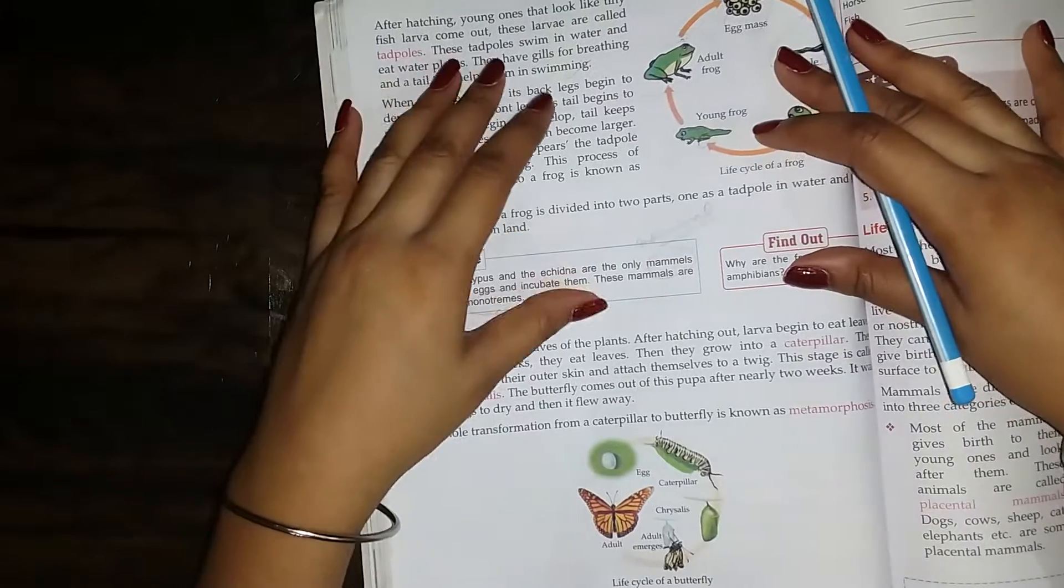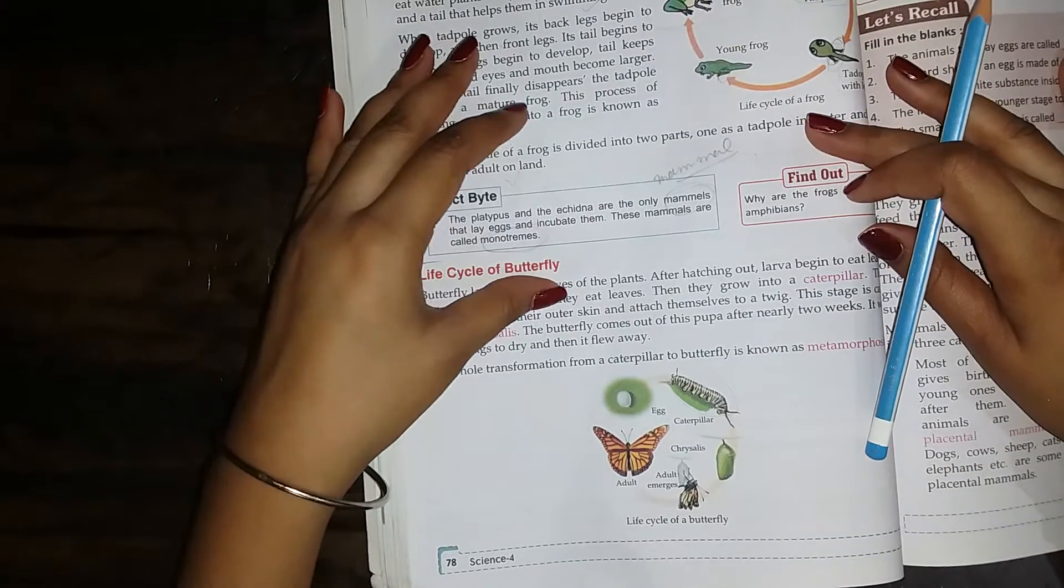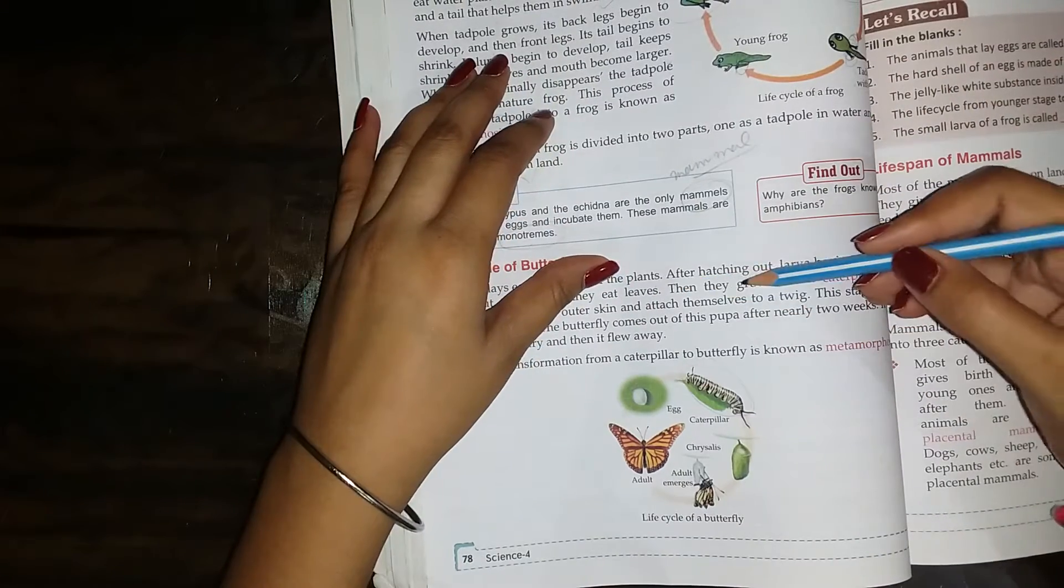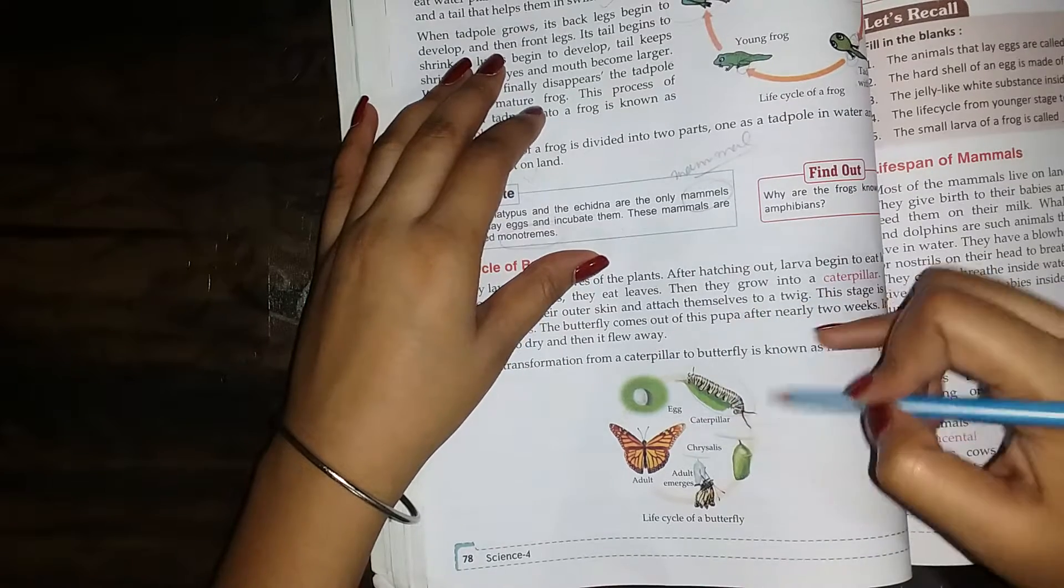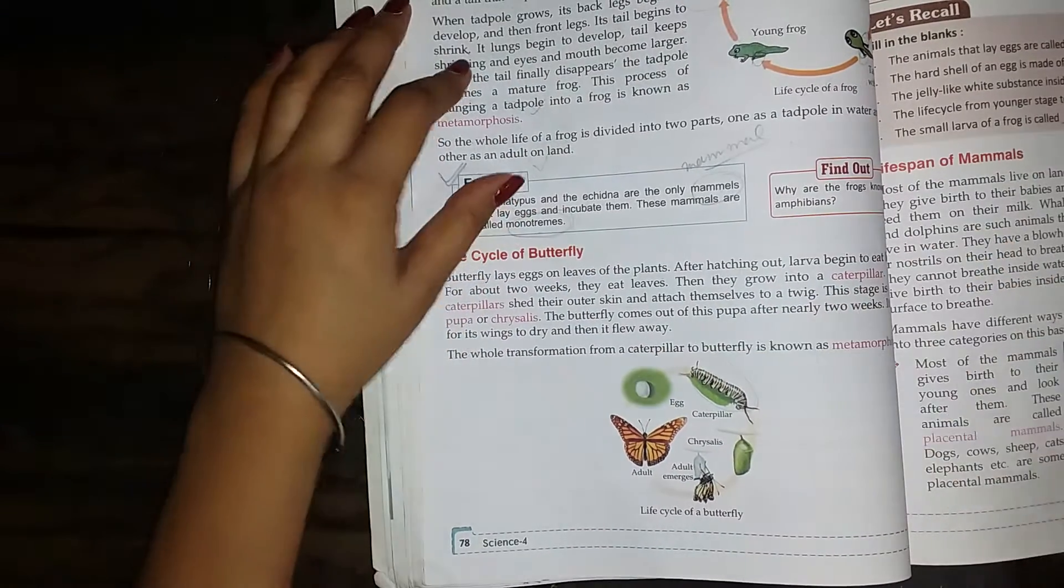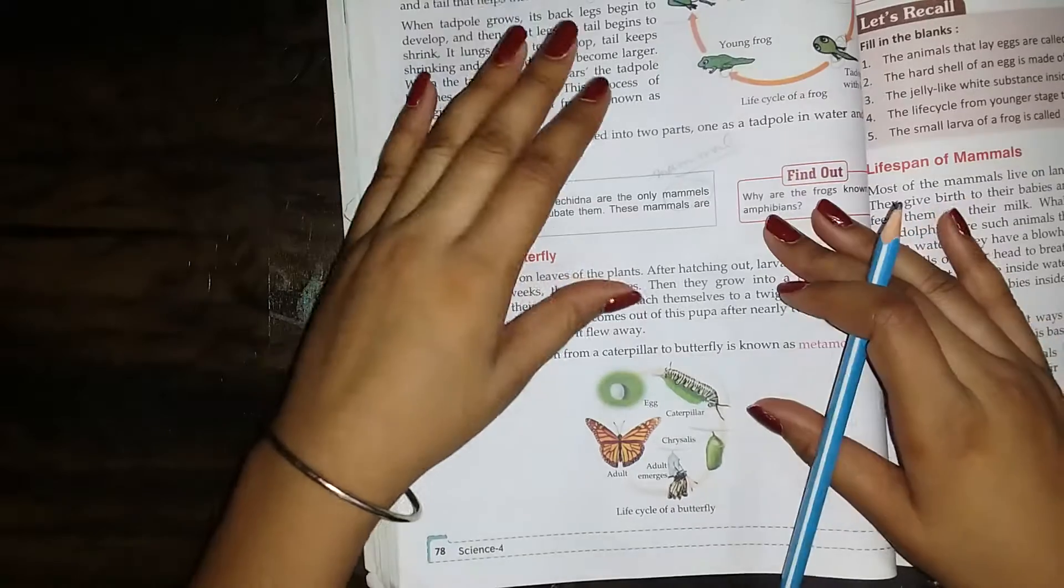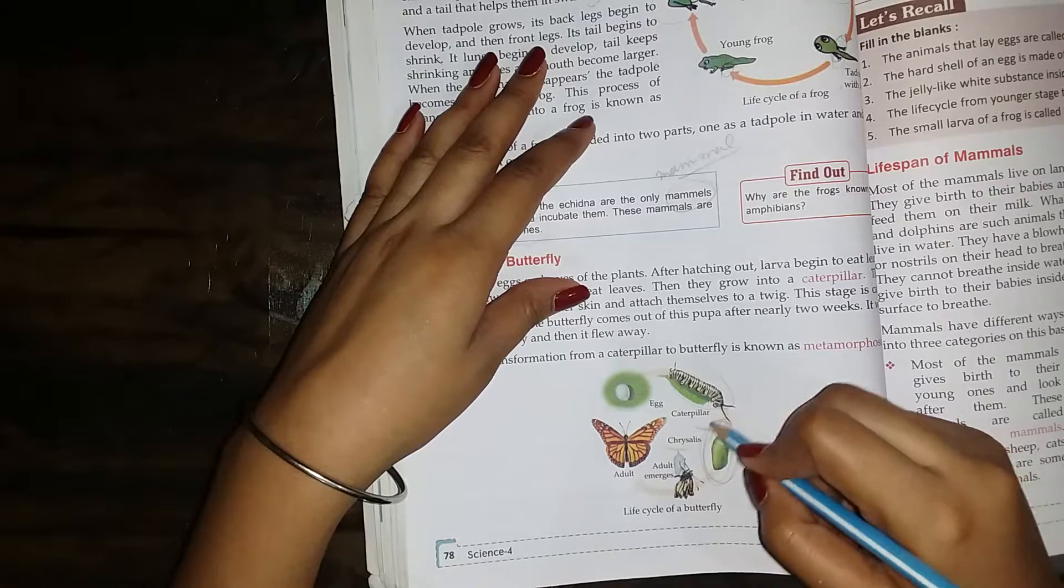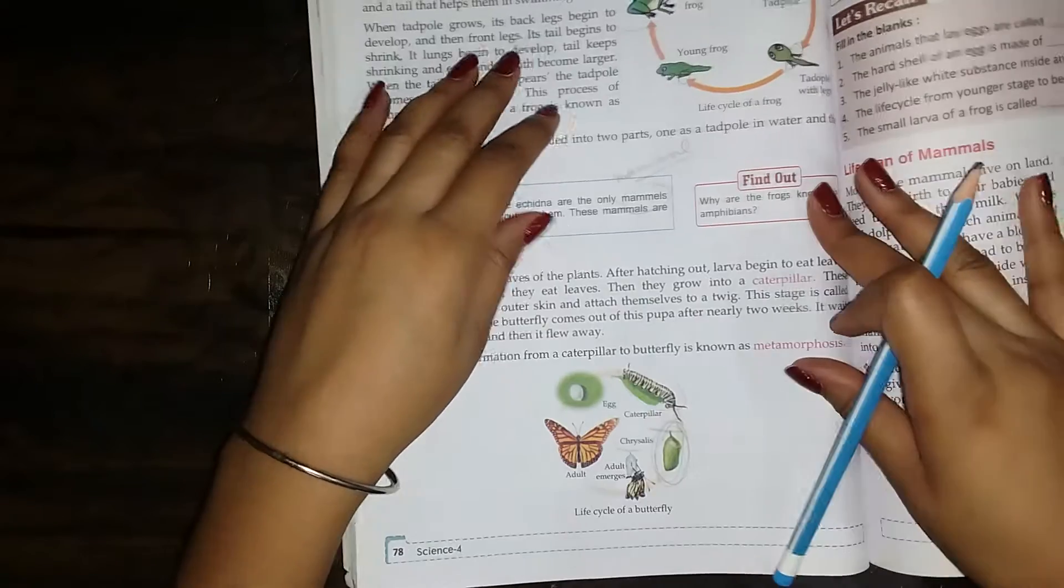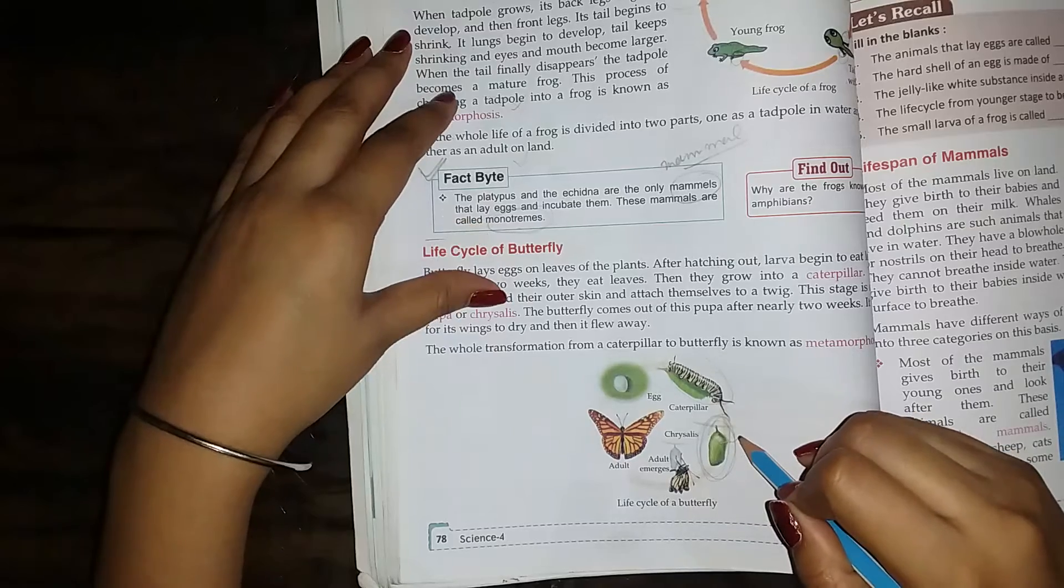Then they grow into a caterpillar. These caterpillars shed their outer skin and attach themselves to a twig. What do they do? These stages are called pupa or chrysalis.